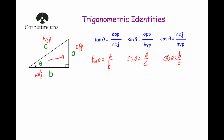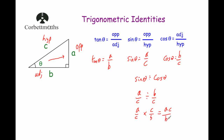Now I'm going to divide sin θ by cos θ. Sin θ is a over c, divided by cos θ which is b over c. When dividing fractions, we keep the first fraction the same, change the divide to multiply, and flip the second fraction to get c over b. So we get ac over bc, and the c's cancel out, leaving a over b. Since tan θ equals a over b, we've shown that tan θ equals sin θ divided by cos θ. That is our first trig identity: tan θ = sin θ / cos θ.